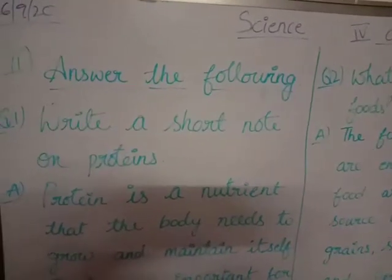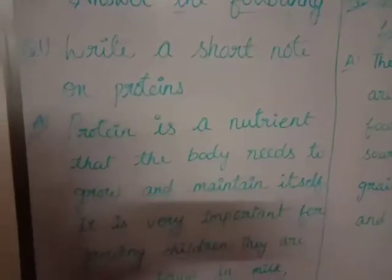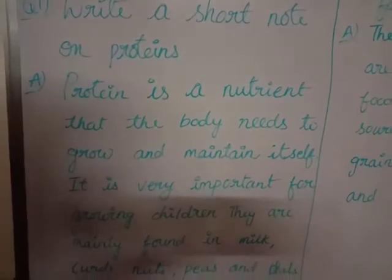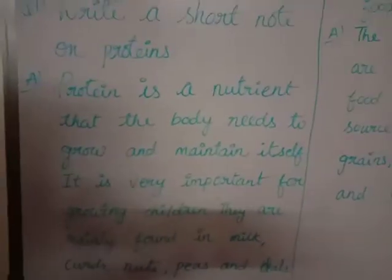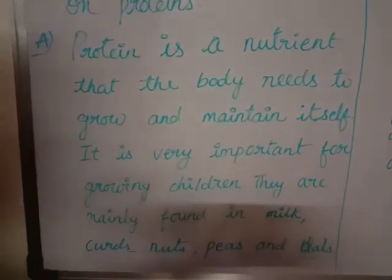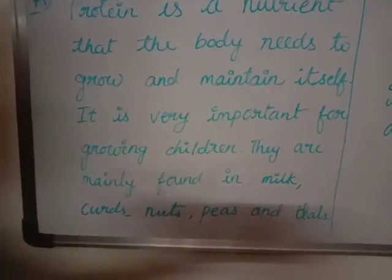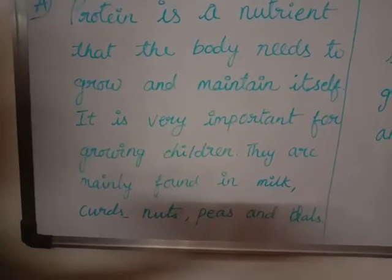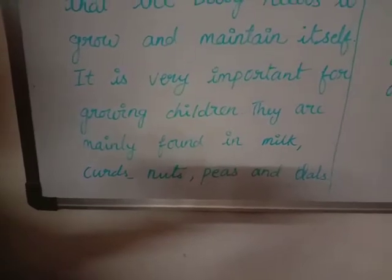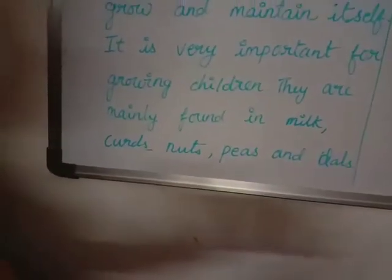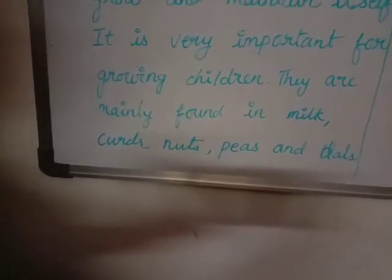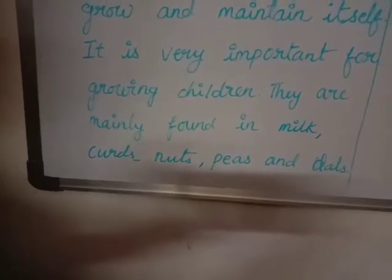The first question is: write a short note on proteins. Answer: Protein is a nutrient that the body needs to grow and maintain itself. It is very important for growing children, because growing children will be playing and moving around a lot, so they require it a lot. Proteins are mainly found in milk, curds, nuts, peas and dals.